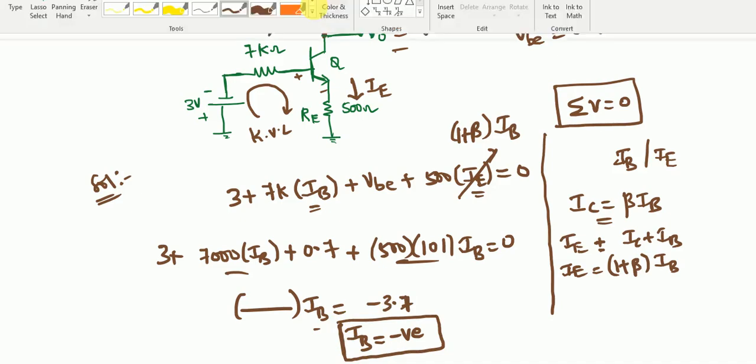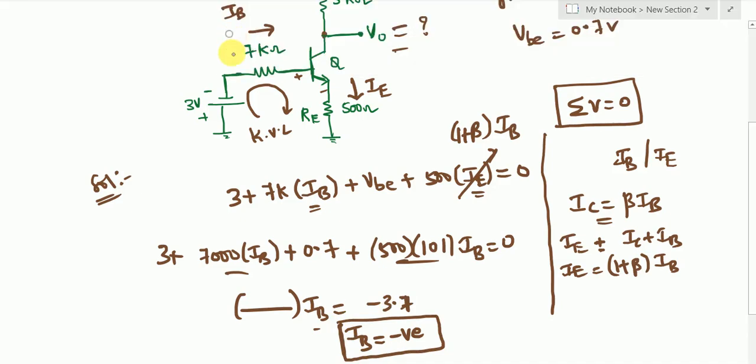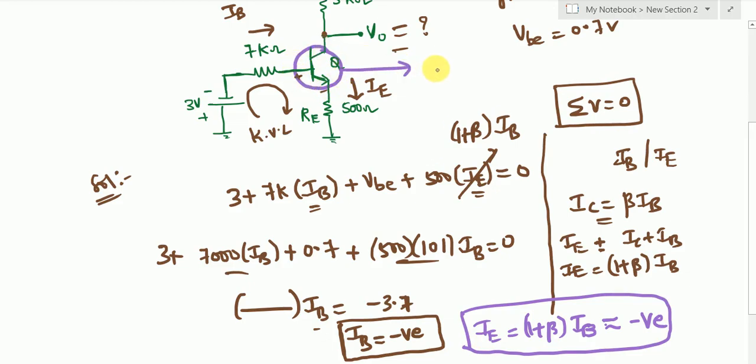Now if you look here, emitter current is given as (1 + β)·IB. So obviously this value will also be negative. So emitter current negative indicates that this transistor, this BJT, is in cutoff, cutoff region.